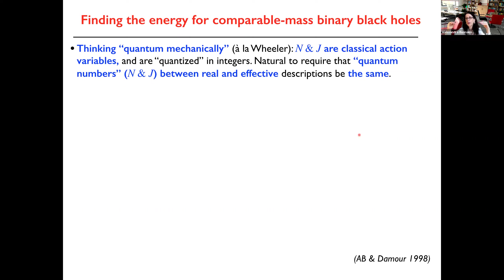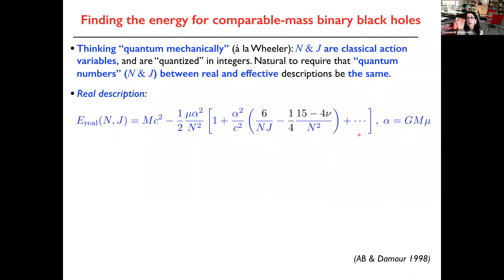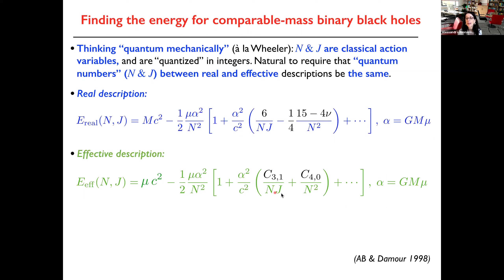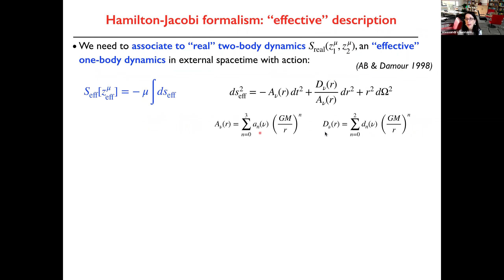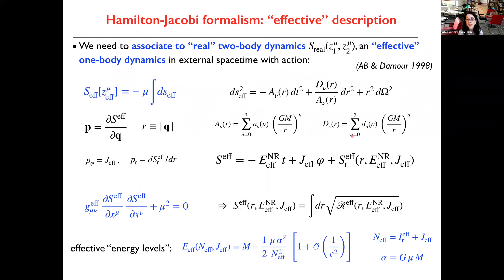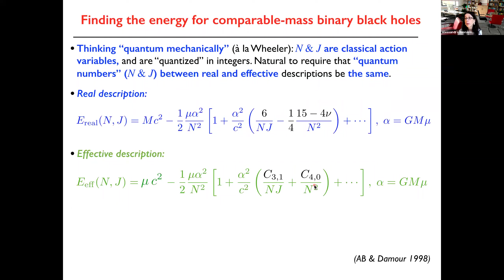I identify the adiabatic invariants between the two descriptions and find the map between the energies. Writing even the 1PN term, I have the real energy with post-Newtonian corrections, and in the effective description I have terms depending on coefficients in the metric that I don't know yet. I plug these into a generic mapping: e_effective is some function of e_real, which I expand in post-Newtonian theory with unknown coefficients. Then I equate the terms — polynomials in 1/n squared, 1/n·j, etc. — giving me a set of equations to solve for the metric coefficients.